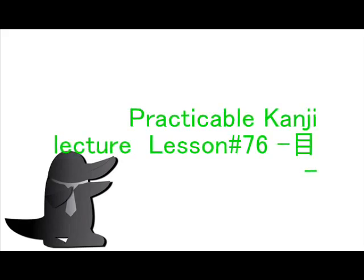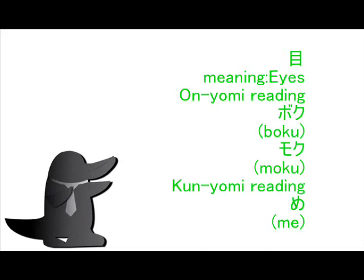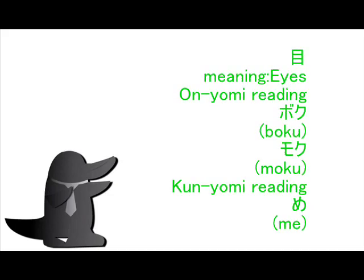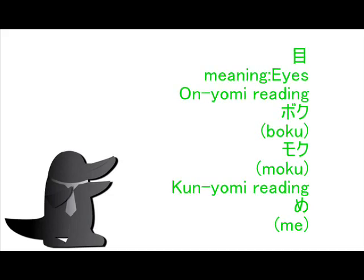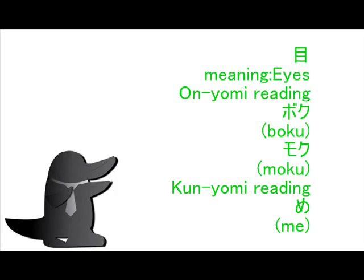Today's Japanese Practical Kanji is this. The main meaning of this kanji is 'eyes.' In On'yomi writing, you can write 'moku' and 'moku.' In Kun'yomi writing, you can write 'me.'